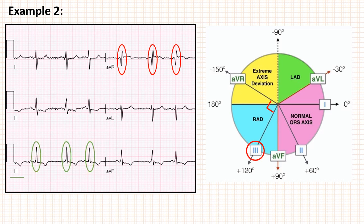So the vector of depolarization is in the same direction of lead 3, which lies in the right axis. So in this ECG, there is right axis deviation.